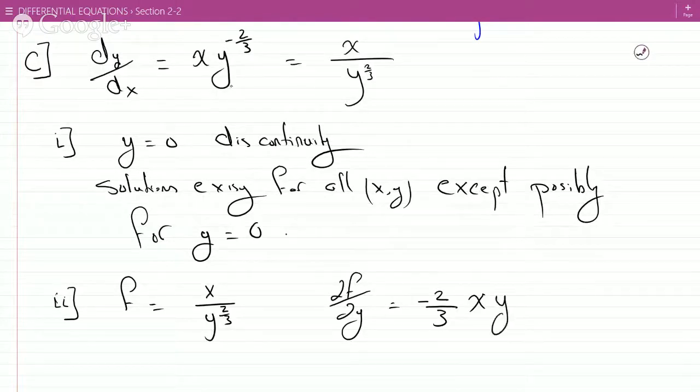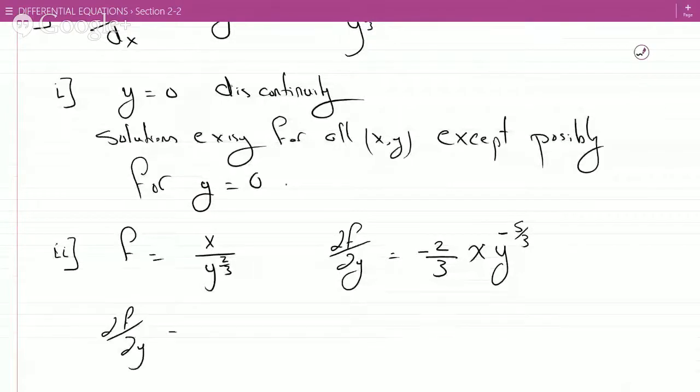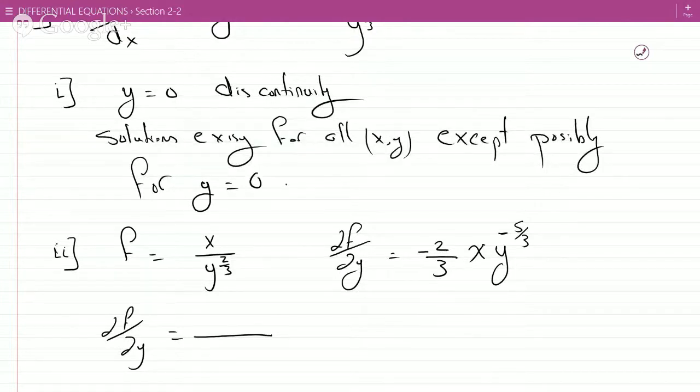So y minus two-thirds minus one, what's that, minus five-thirds. So that means df over dy. Elevate this, put it in an elevator and bring it down. At a cost of a negative, you know, switching the sign of the exponent. So you get y to the five-thirds.